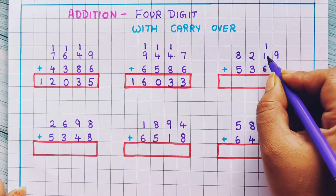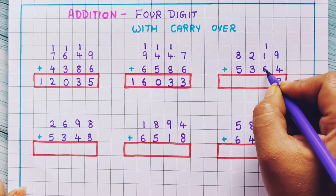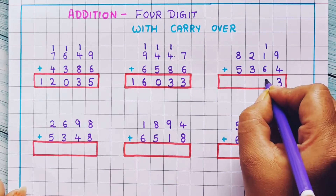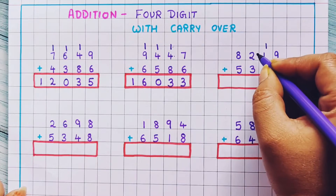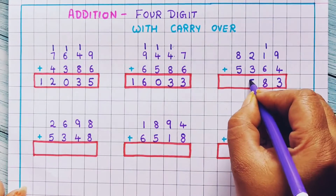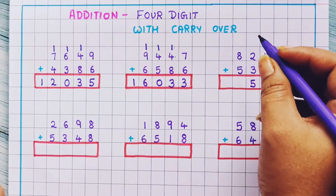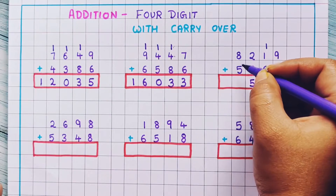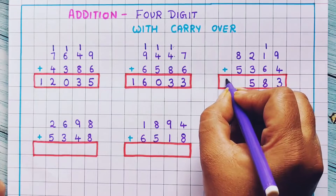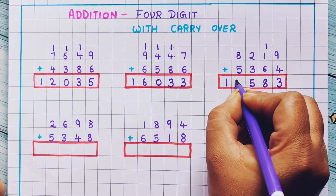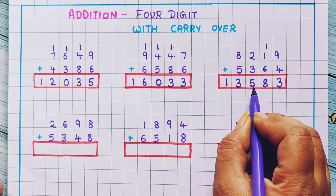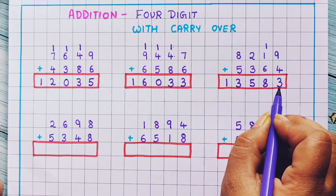Now 1 plus 1 is 2, and 2 plus 6 is 8. So I will write 8 here. 2 plus 3 is 5, so I will write 5 here. Now 8 plus 5 is 13, so I will write 13 here. The answer is 13,583.